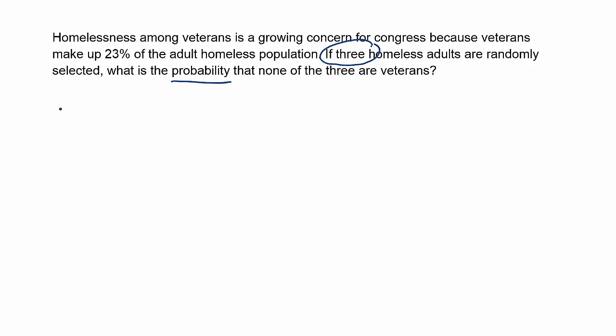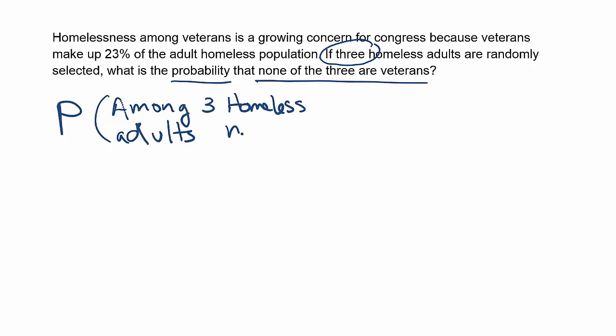Let's start with a statement that expresses what we're looking for. We're looking for the probability that when we randomly select three homeless adults, none of them are veterans. So: the probability that among three homeless adults, none are veterans — I'm going to use V for veterans to abbreviate.